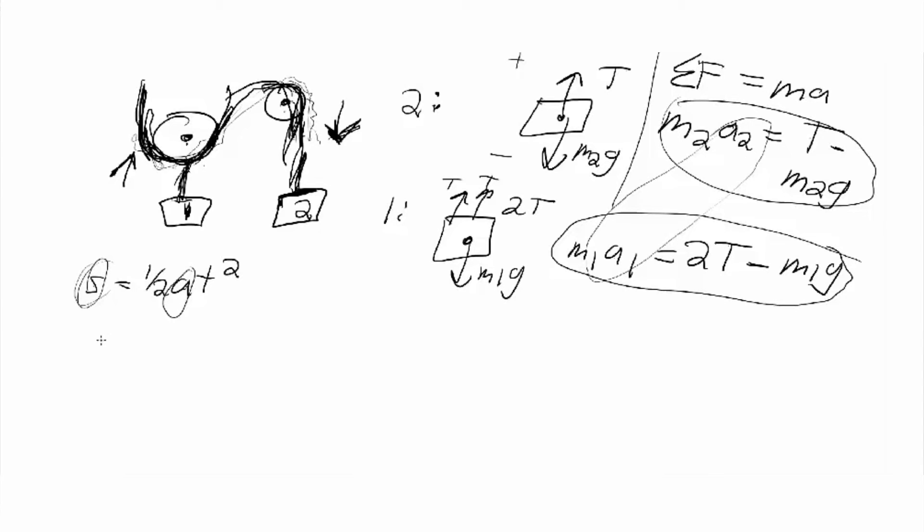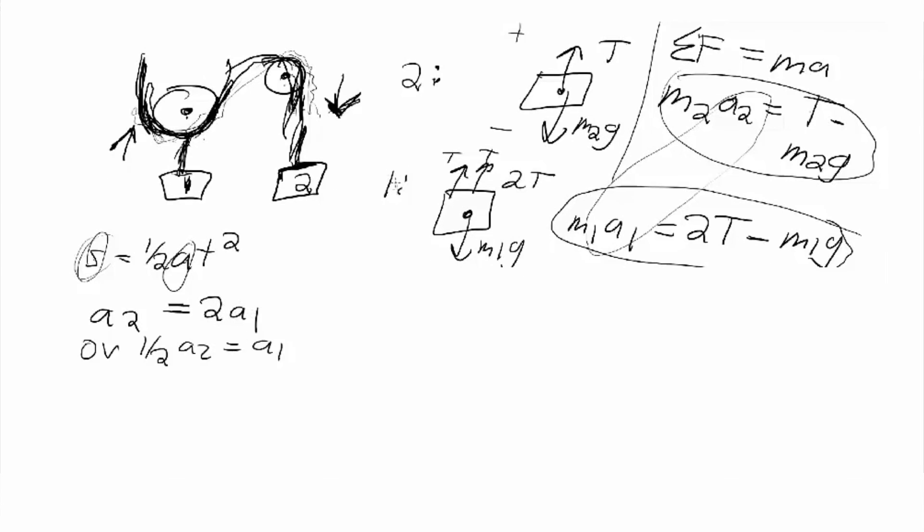It'll actually mean that A2 equals 2A1. You're thinking, what? But the best way to conceptualize this is that if you look at it, each time this goes down by one unit, this will go up by half a unit because it has to go up half and a half. So when you relate those kinds of lengths together, you'll see that this relationship exists. That A1 will have to be half of A2. So that's the relationship for A1 and A2.